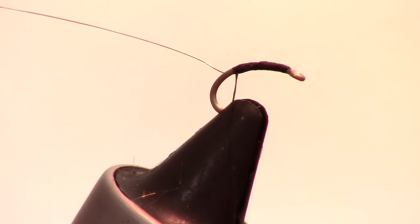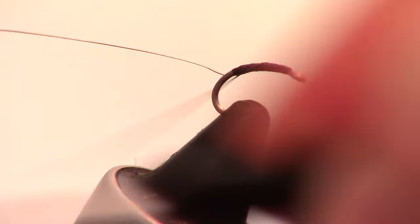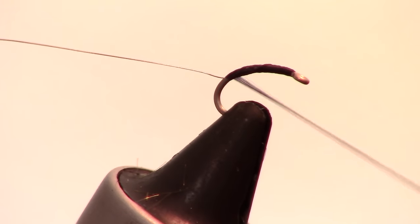If your thread starts to get twisted, untwist it by spinning the bobbin counterclockwise. Then wrap all the way down the hook shank as far as you feel comfortable.